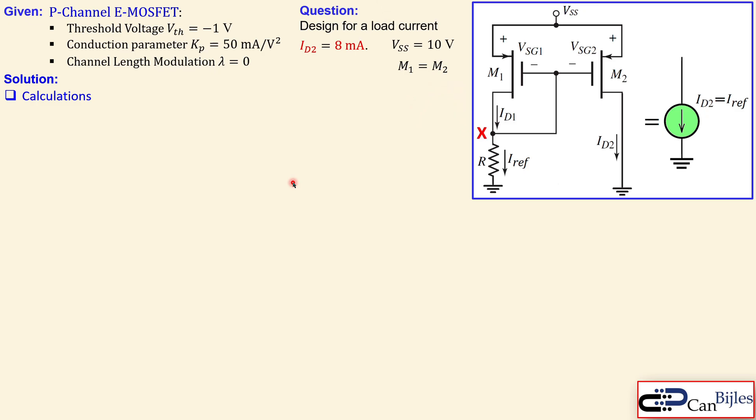In the solution we designate the nodes X and Y. We start with VSG1 equals VSG2, as they are in parallel for this circuit. That means the drain current for both transistors will be the same, so we designate them as VSG. For P-channel transistors we use VSG instead of VGS. The Kirchhoff voltage law from top to ground is VSS plus VSG plus the voltage across resistor R. Ohm's law gives us VR equals R times Iref.